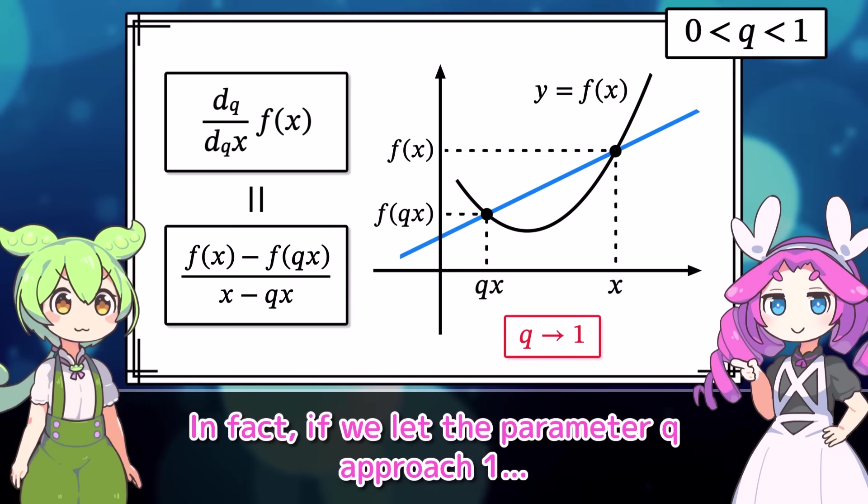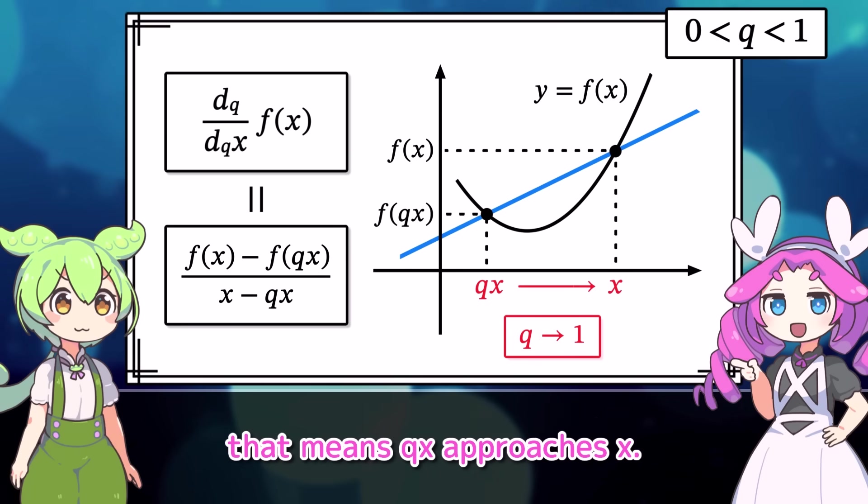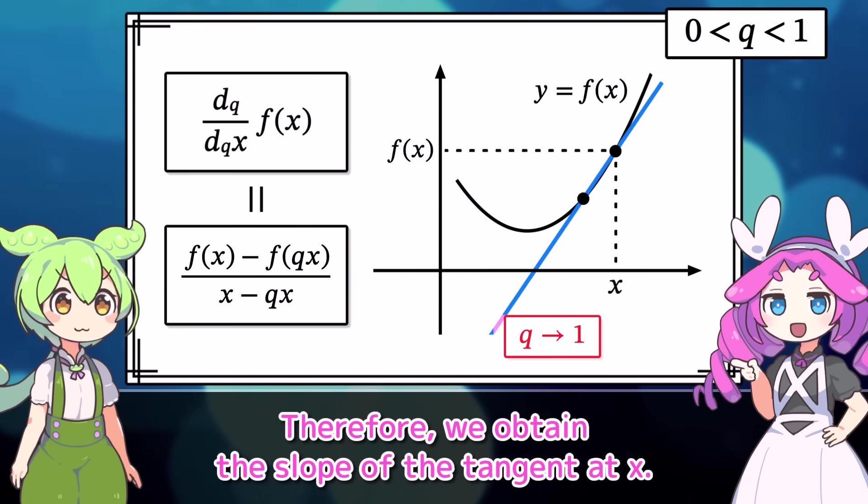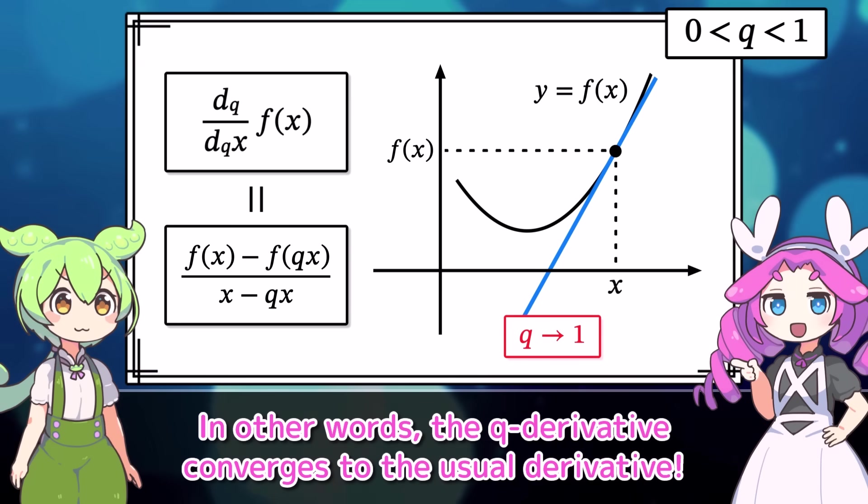However, we can think of it as a kind of discrete analog of the usual derivative through the parameter q. In fact, if we let the parameter q approach 1, that means qx approaches x. Therefore, we obtain the slope of the tangent at x.